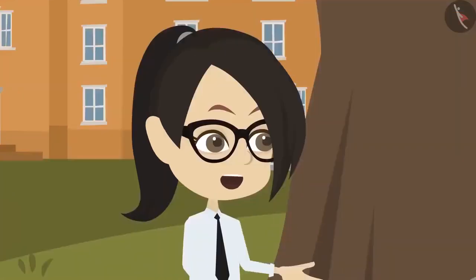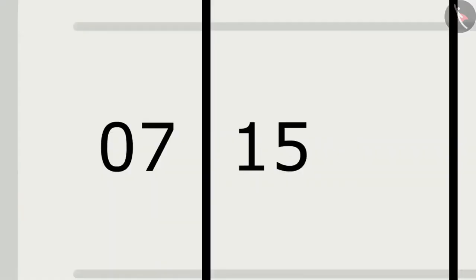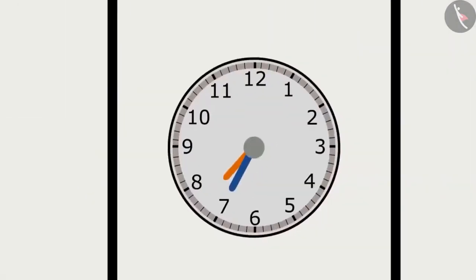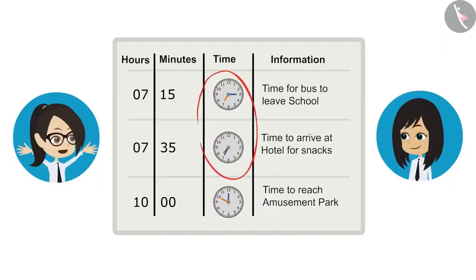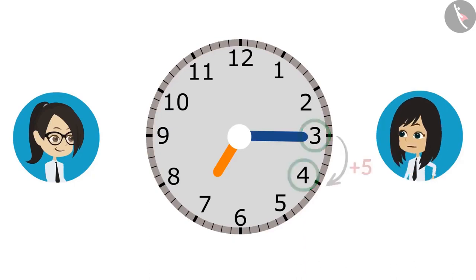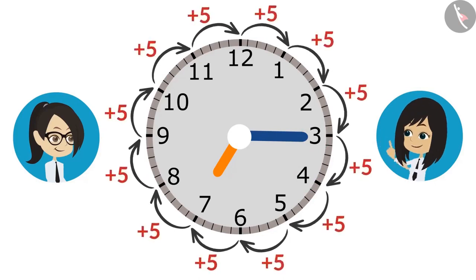Look at the minute hand when the time is 15 minutes past 7 o'clock — the minute hand is at 3. And when it is 35 minutes past 7 o'clock, the minute hand is at 7. We only have to find the difference between minutes. The difference from one number to another number is 5 minutes, so while going from one number to another, we keep adding 5.